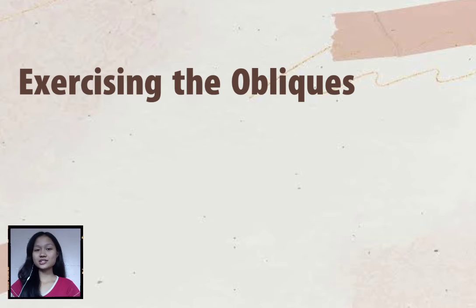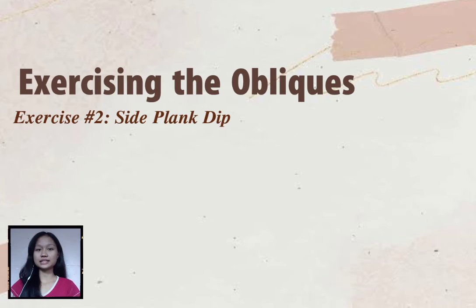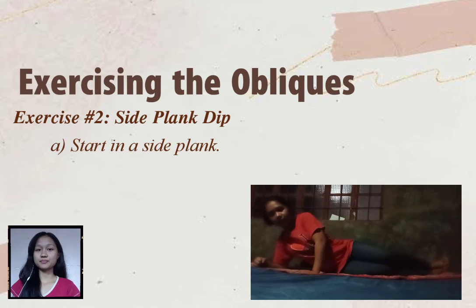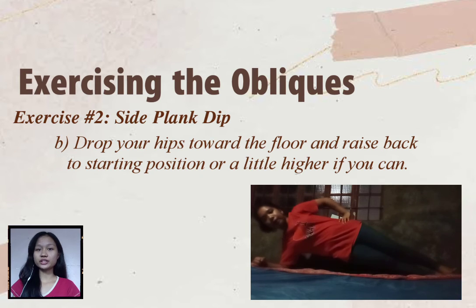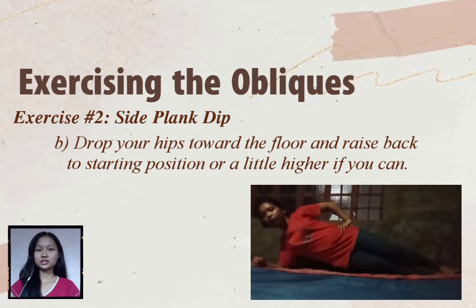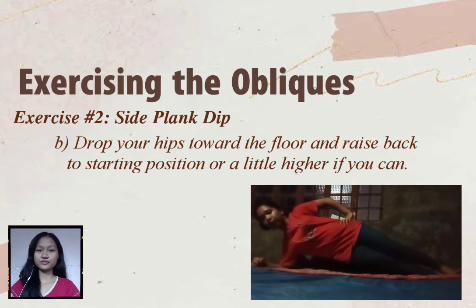The second exercise for the oblique muscle is called the side plank dip. Start in a side plank, then drop your hips toward the floor and raise back to the starting position, or a little higher if you can.